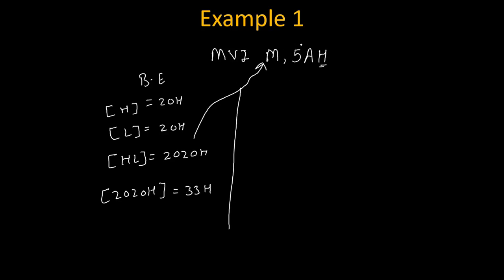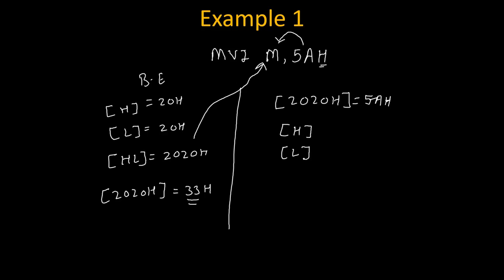Because of this instruction, the new data FAH will get copied inside the memory, taking the place of 33H. So after execution, the content of 2020H will change and become FAH. The content of H will remain the same, the content of L will remain the same, and therefore the content of the HL pair will remain 2020H. The only change is that data gets copied into the memory whose address is stored in the HL register pair.